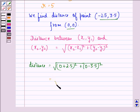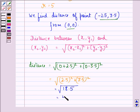That is equal to √[(2.5)² + (3.5)²]. This is equal to √18.5, that is approximately equal to 4.3.